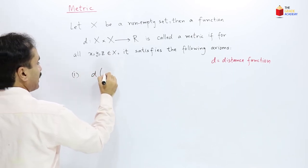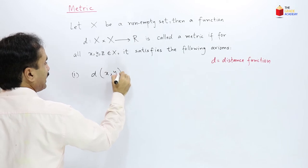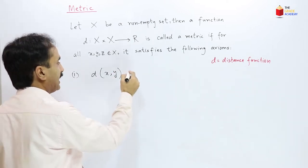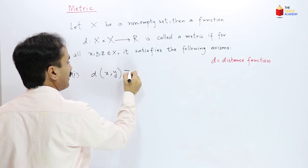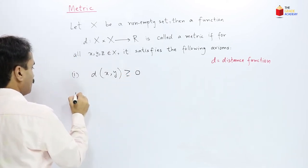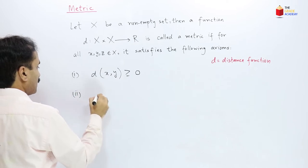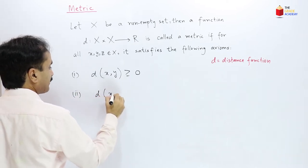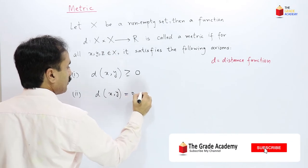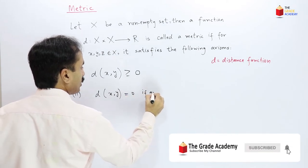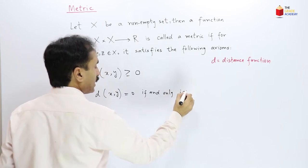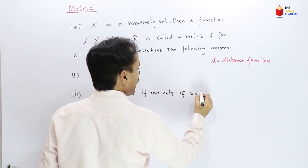The distance between x and y is greater than or equal to 0. Number 2: d(x,y) is equal to 0 if and only if x is equal to y.